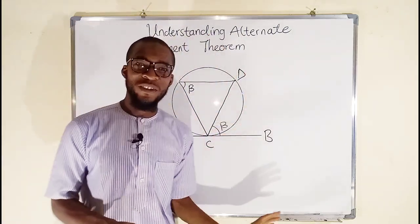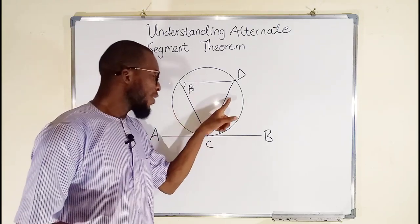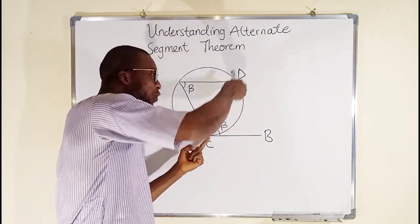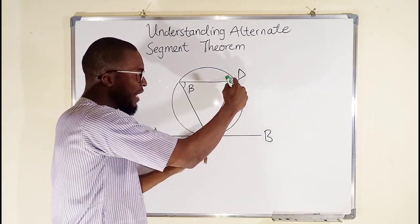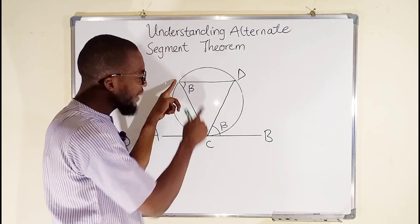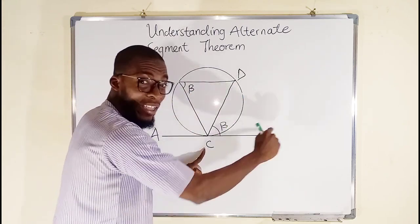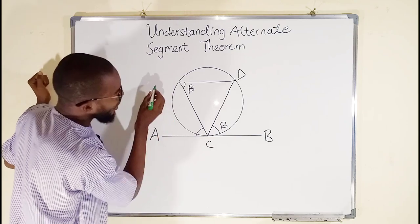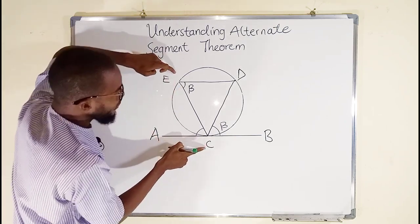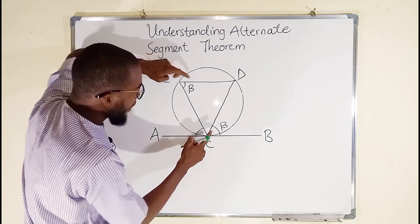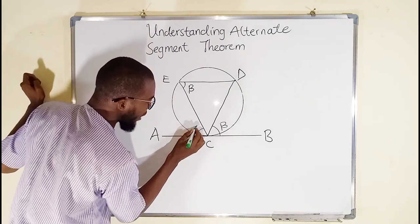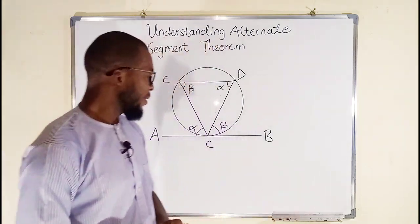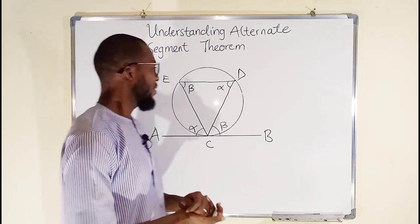So what the Alternate Segment Theorem is telling us is that the angle formed by the chord and the tangent is exactly equal to the angle subtended by that chord to the circumference. You can see the chord CD subtends an angle to the circumference — it must be exactly equal to the angle formed by that chord and the tangent. And even for the chord CE: CE is a chord and it subtends an angle to the circumference. Therefore, if this is alpha, this must also be alpha. That is what the Alternate Segment Theorem is telling us. But should we prove it? Yes, I think it is necessary.